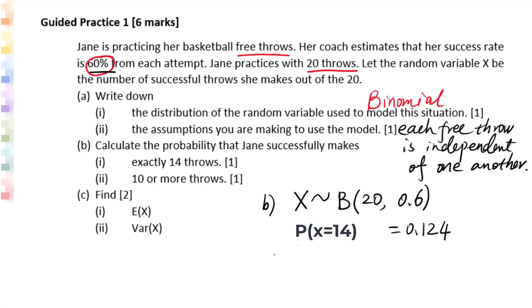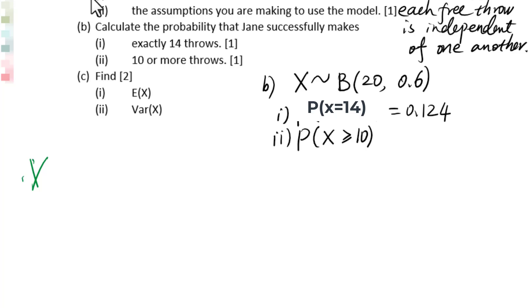Let's go to B2. 10 or more throws. Probability X greater than or equal to 10. We need to remember, in AISL level, there are two situations you have to change into probability X less than or equal to A form.